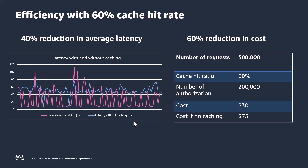In order to understand the cost better, I ran some numbers. Assuming we make half a million API calls with no caching enabled, each of these requests would have been authorized, resulting in 500,000 requests to Amazon Verified Permissions — costing you $75. With caching enabled and assuming a 60% cache hit ratio, only 200,000 requests are made to Verified Permissions, with the rest based on cached decisions. For those 200,000 requests, you pay $30. All in all, there is a 60% reduction in cost when using authorization decision caching.